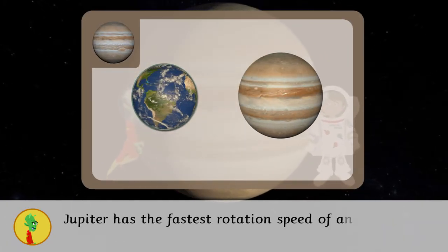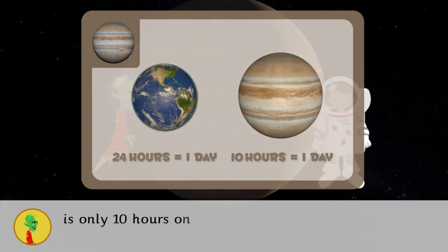Jupiter has the fastest rotation speed of any planet, and one day on Jupiter is only 10 hours on Earth.